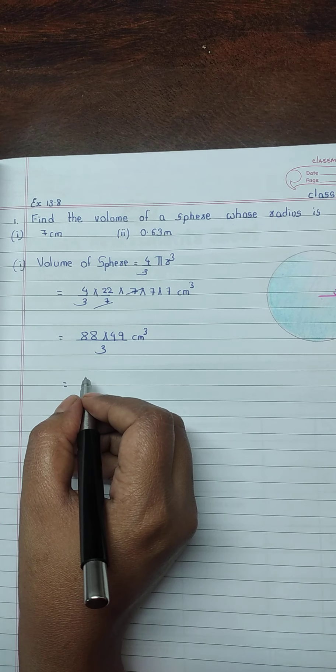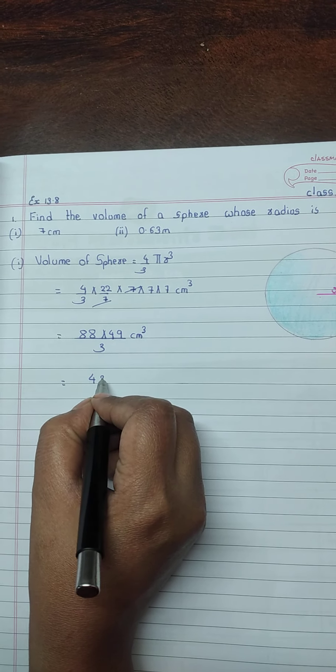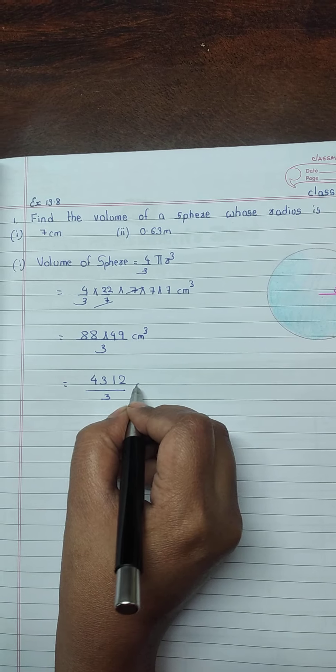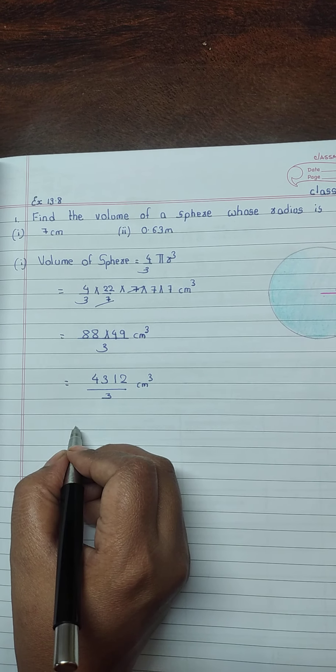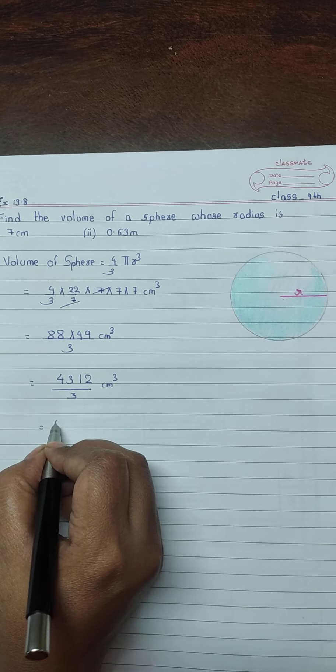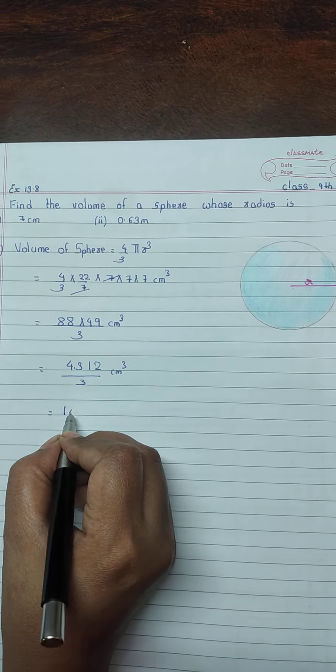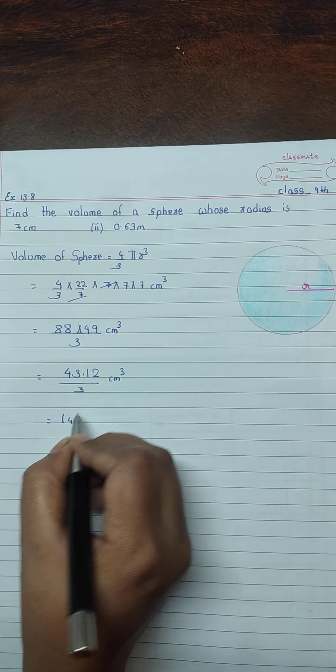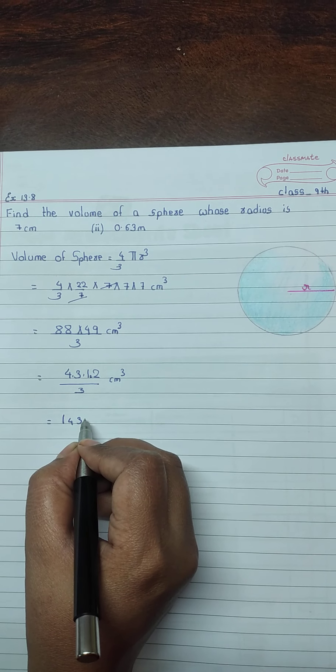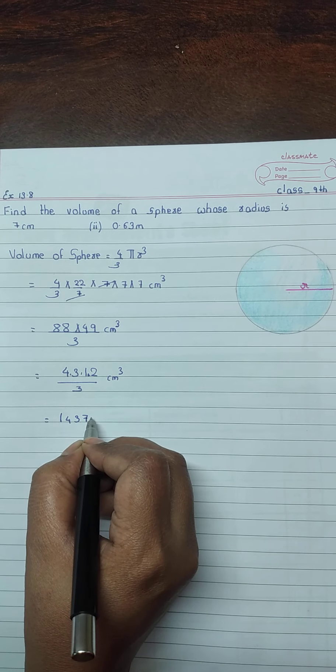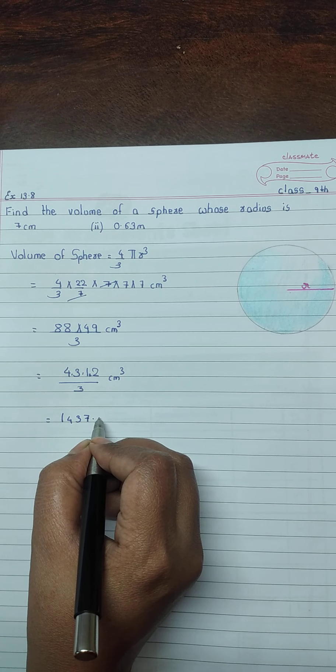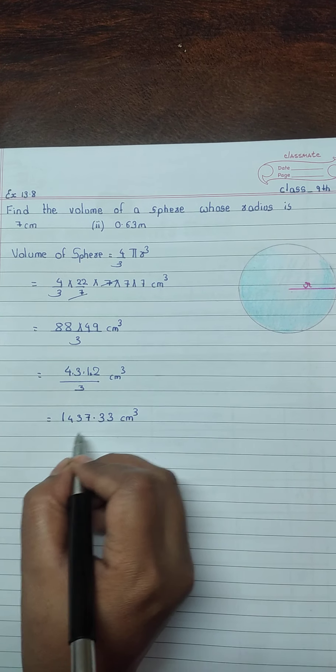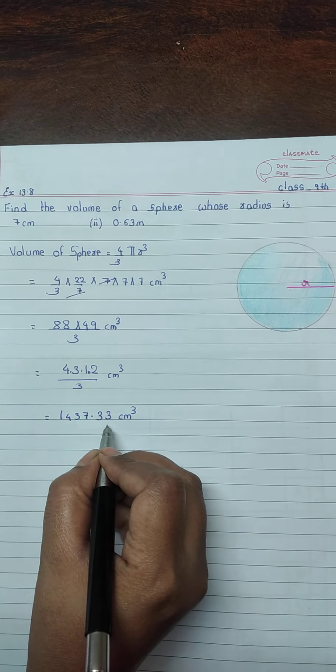88 into 49 is 4312 divided by 3 cm cube. We have to divide this by 3. 3 ones are 3, 3 fours are 12, 3 threes are 9, 3 sevens are 21. Then 3 threes are 9, 3 threes are 9. So the answer is 1437.33 cm cube.